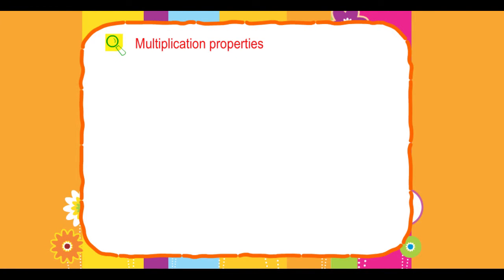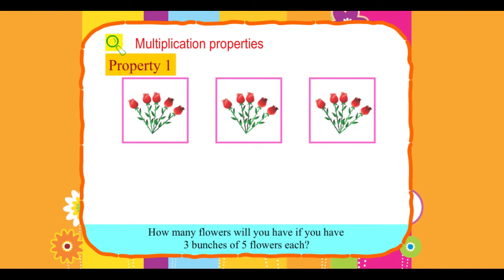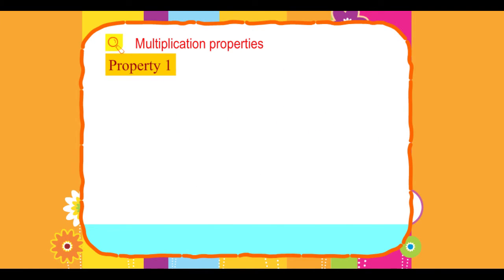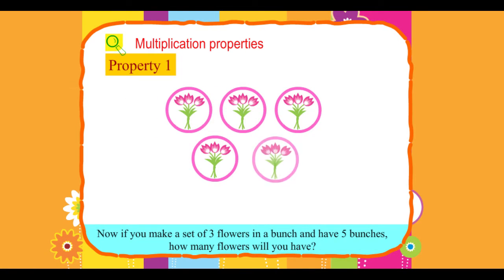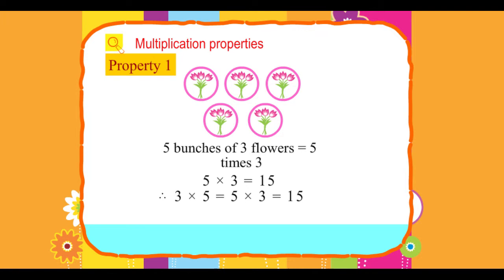Multiplication Properties - Property 1. How many flowers will you have if you have 3 bunches of 5 flowers each? 3 bunches of 5 flowers equals 3 times 5, which equals 15. Now, if you make a set of 3 flowers in a bunch and have 5 bunches, how many flowers will you have? 5 bunches of 3 flowers equals 5 times 3, which also equals 15. Therefore, 3 × 5 = 5 × 3 = 15.